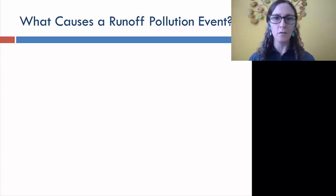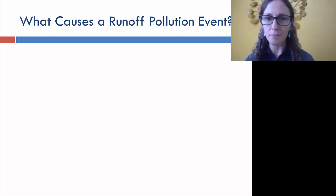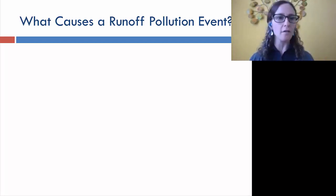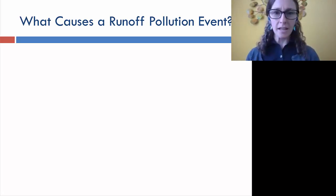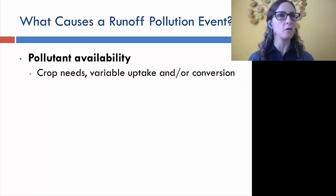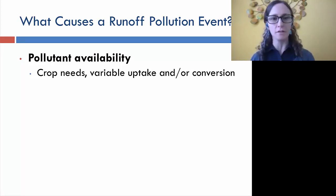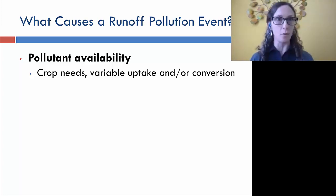When you look at what causes a runoff event, number one is that you need some type of pollutant availability — you've either applied manure or fertilizer to a field, and there's some discrepancy where the crop needs aren't quite matching up yet. There's variable uptake and conversion; it's available or it's fresh, just put out there.